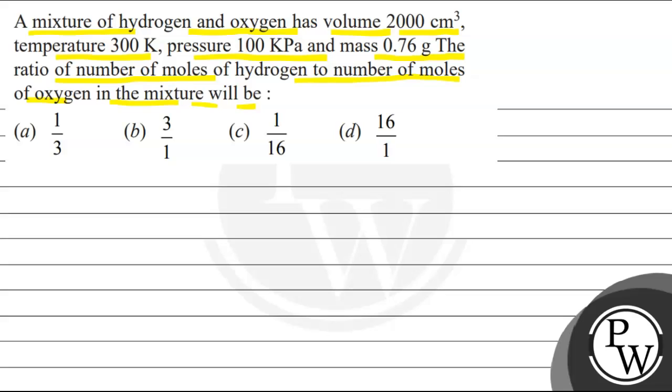Let's discuss the concept. The concept here is ideal gas equation, that is PV equals nRT. We'll calculate P equals nRT upon V in this form. Now let's see the solution.